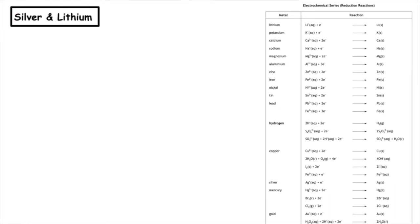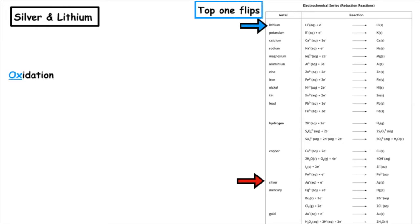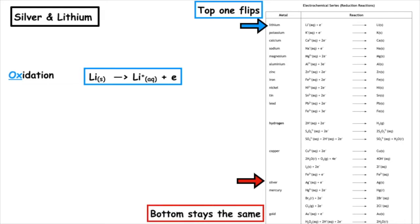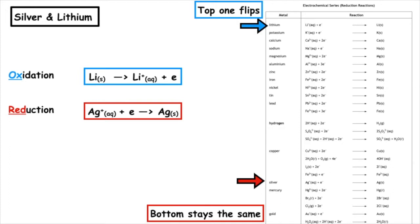Let's take silver and lithium as an example. We use page 10 of our data booklets to identify the position of silver and lithium in the electrochemical series. The top one flips, so we take lithium and rewrite the equation in the opposite way: Li(s) → Li⁺(aq) + e⁻. That is losing an electron, so it's known as oxidation. The bottom one remains the same: Ag⁺(aq) + e⁻ → Ag(s) — gaining an electron on the reactant side, so that's a reduction.